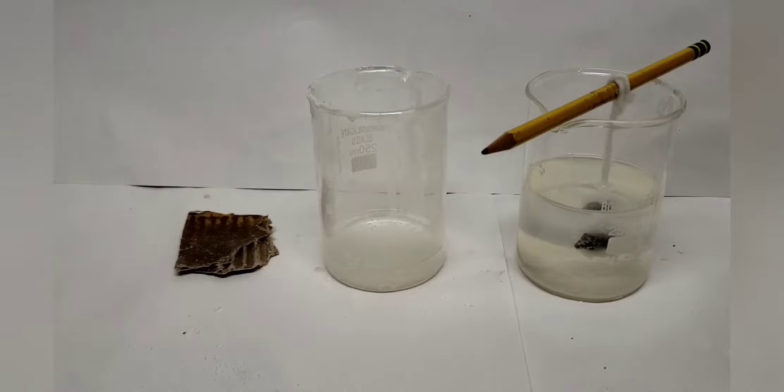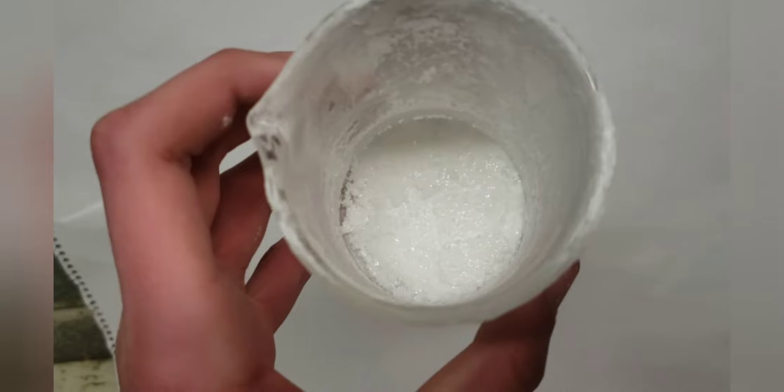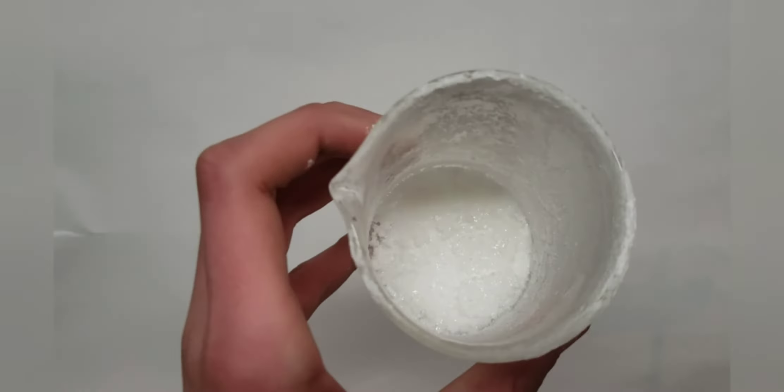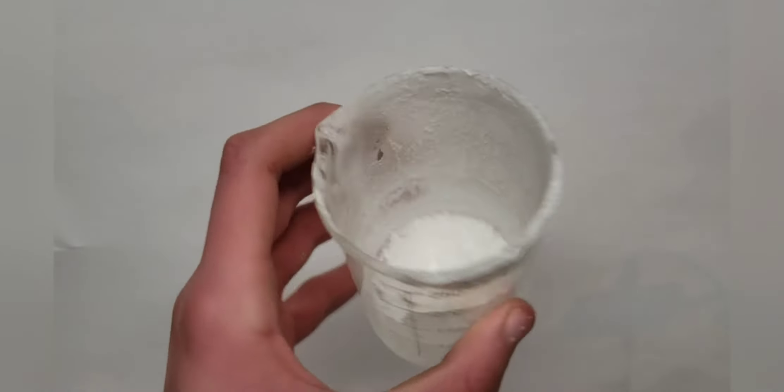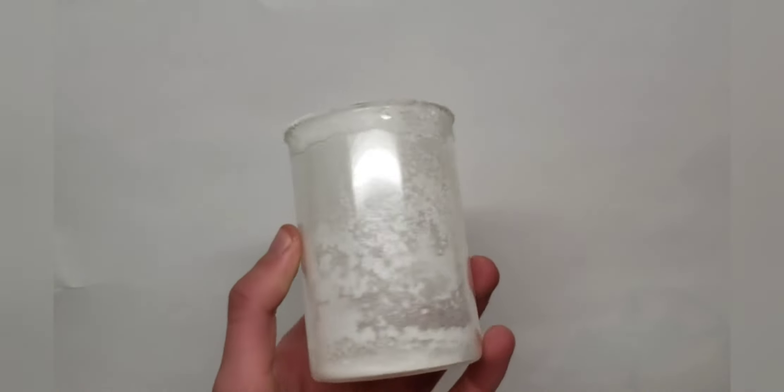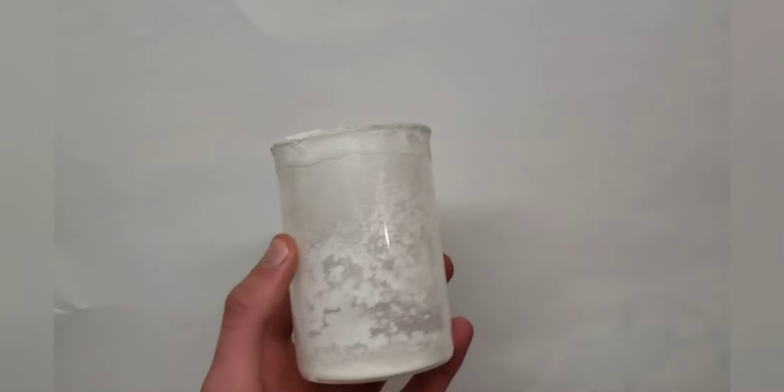So after about a day or so, the beaker with just the solution in it had fully evaporated, and left a whole bunch of salt crystals formed all over it. And even some on the outside, which is a little bit odd, but I'm pretty sure that was just from a little bit of spilling when I originally made it. And I didn't show the little cardboard one because it basically didn't change at all.